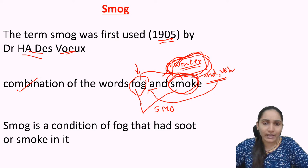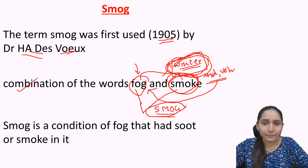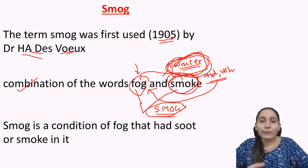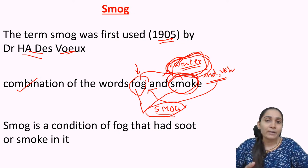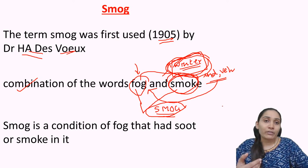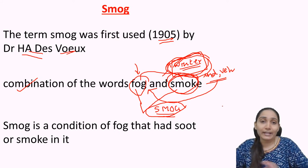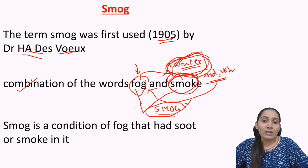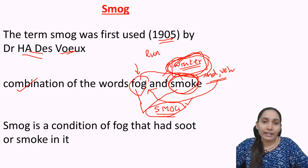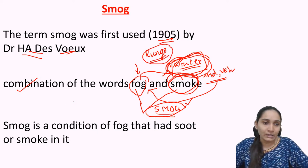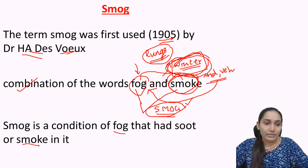If you have ever been to Delhi or other places with high prevalence of smog in winter, you may have observed breathing difficulties. When I was in Delhi for almost a year, during the winter season I experienced breathing difficulties, asthmatic issues, and bronchitis — all due to the intake of smog. The lungs are the part of the body most affected by smog. Smog is essentially fog that has soot or smoke in it.